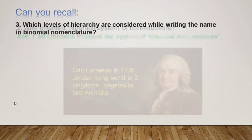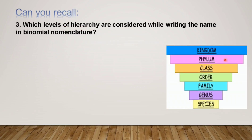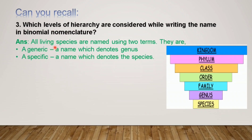Now let us look at the third question: which levels of hierarchy are considered while writing the name in binomial nomenclature? Previously we saw the seven levels of hierarchy: kingdom, phylum, class, order, family, genus, and species. From these, the levels considered for binomial nomenclature are: a generic name which denotes genus, and a specific name which denotes the species. So genus and species are the two levels used to write the binomial nomenclature name.